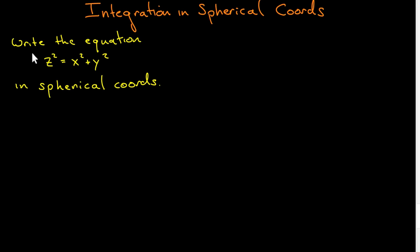The first question is the following. We are asked to write the equation z squared equals x squared plus y squared, which is in Cartesian coordinates, in spherical coordinates. And I've chosen this particular problem because it's not probably so immediately obvious as to what this is in spherical coordinates.